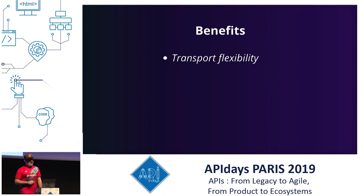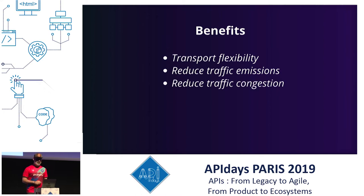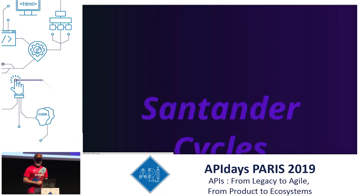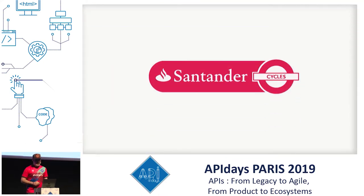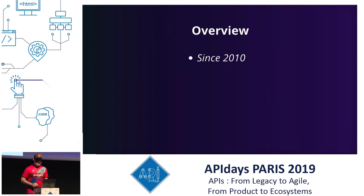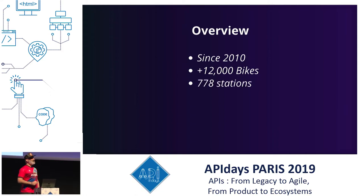Some benefits of bike sharing are transport flexibility — this is a modern solution we can see in many cities. It reduces traffic emissions and pollution, and there's a chance to reduce traffic congestion. There are also health benefits for users, besides the accidents of course. The Santander Cycles scheme is quite mature now. There are 12,000 bikes being monitored by the system and 778 stations. This is the use case I'm going to develop in this talk — quite a lot of data.